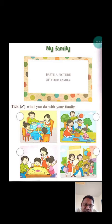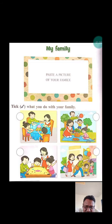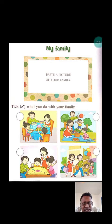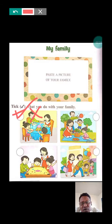Now tick what you do with your family. Look at the first picture — there is papa, mommy, and their daughter and son. They are eating together. So are you eating together? If yes, you should tick. If you don't eat with your family, you should cross out.